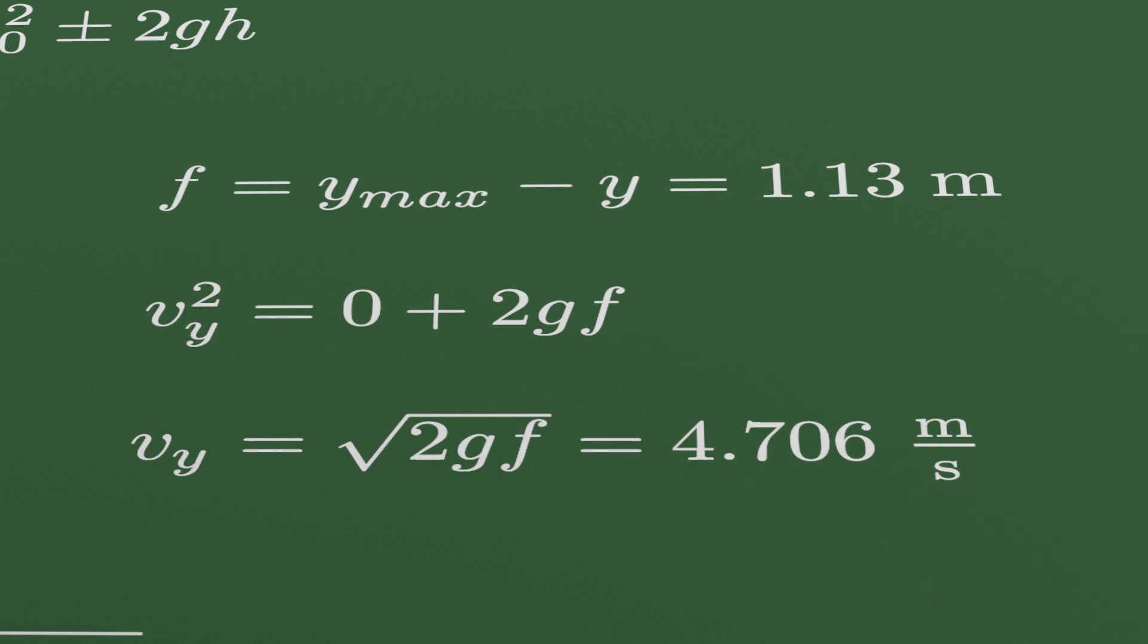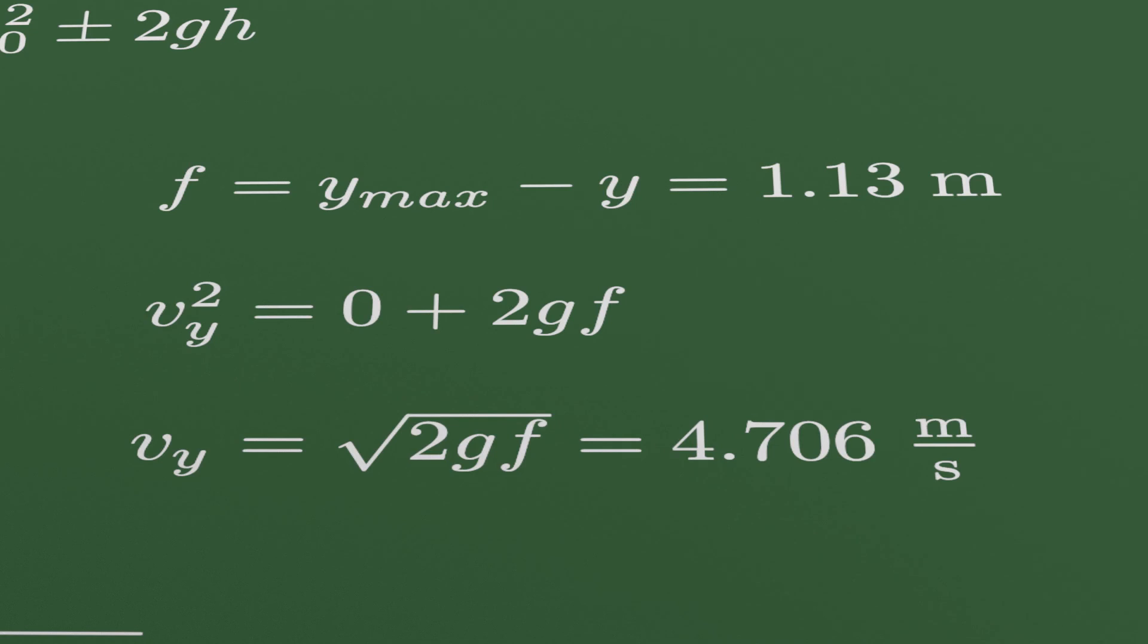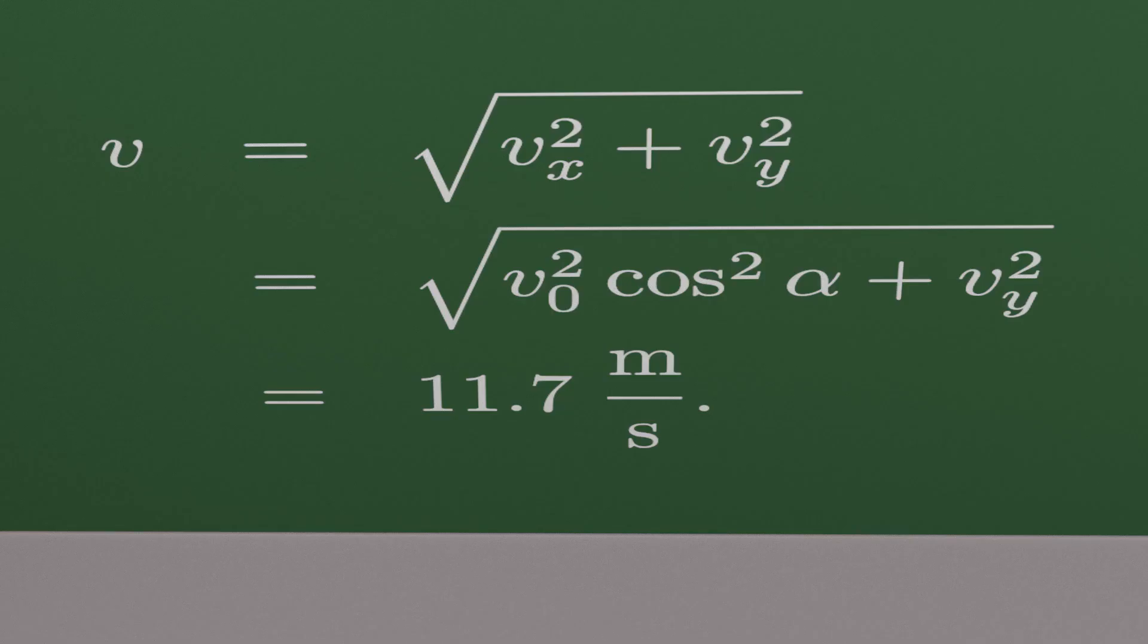So again, 1.13 meters is from this point here to this point here. Again, using the same equation, and using the fact that Vy is zero in the beginning of the motion, we will have that Vy is 4.7 meters per second. Using the square root, we will have that the speed in this point here is 11.7 meters per second.